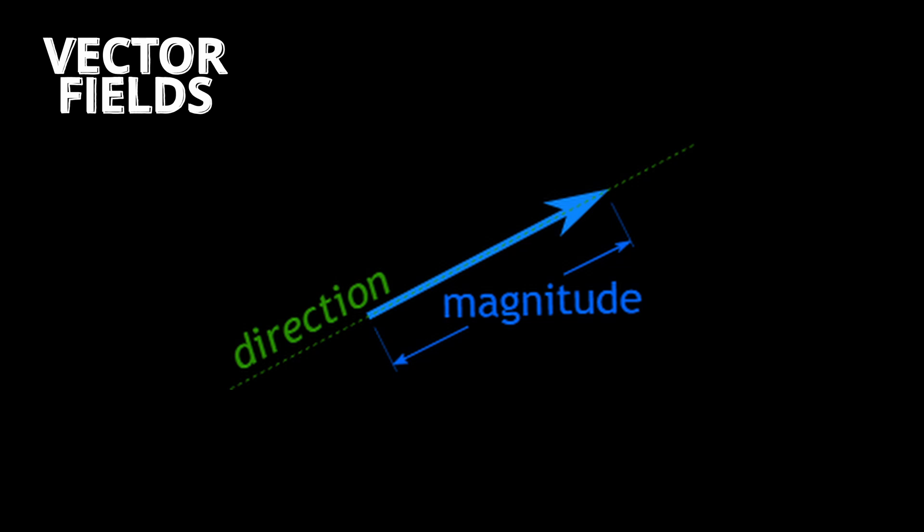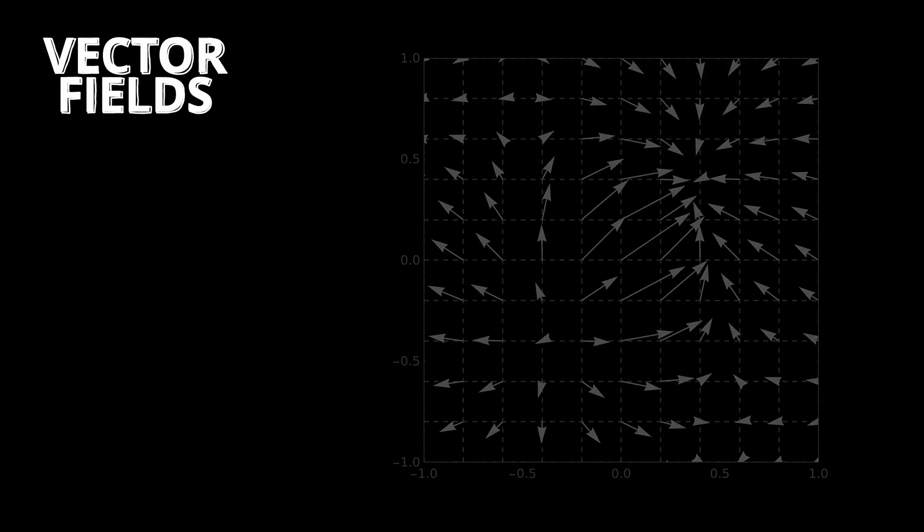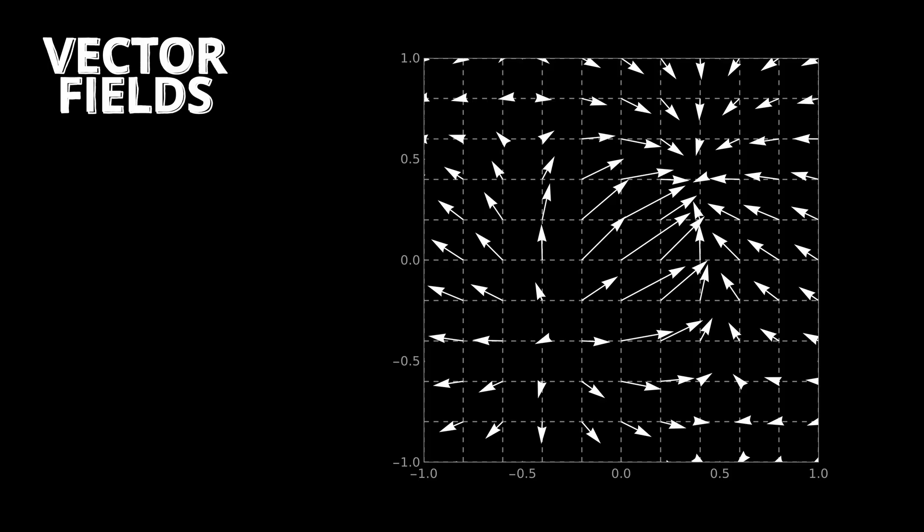Vector fields. Vectors are quantities with both magnitude and direction. A vector field is the assignment of a vector to each point in space. This field is visualized as a bunch of arrows, each with its own magnitude and direction. For example, at this point, there exists a vector that has a certain magnitude going in this direction.